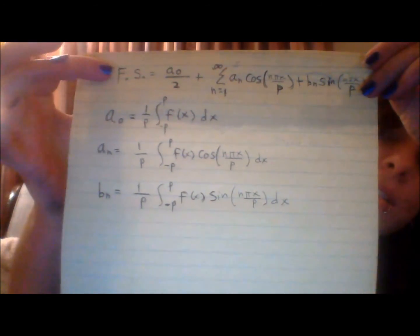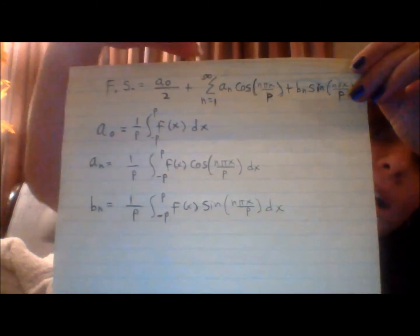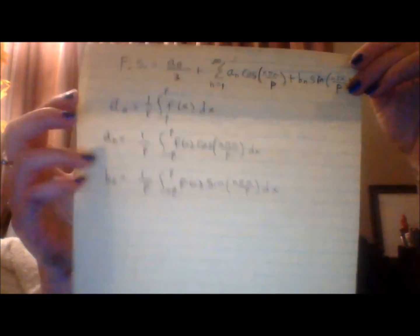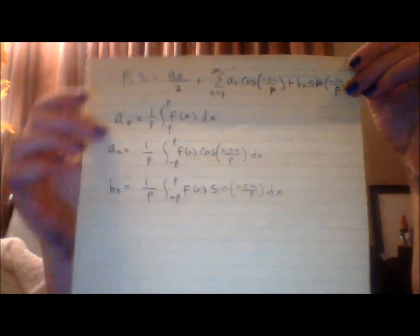This is the format that your solution is always going to be in: a_0, a sub n, and b sub n. You find those using these formulas right here.